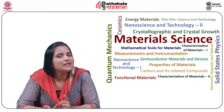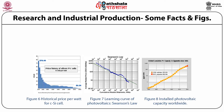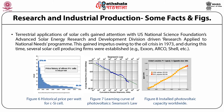Let us next discuss research and industrial production. Terrestrial applications of solar cells gained attention with the U.S. National Science Foundation's Advanced Solar Energy Research and Development Division, driven by research applied to national needs. This gained impetus due to the oil crisis in 1973, during which several solar cell producing firms were established, for example Exxon, Arco, Shell, etc. These were soon joined by technological industries such as GE, IBM, Tyco, etc. The declining cost of solar cells led to their exponential growth.